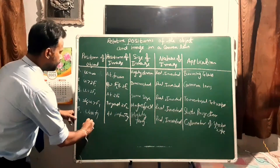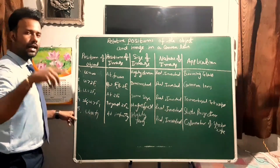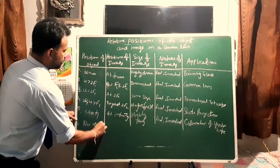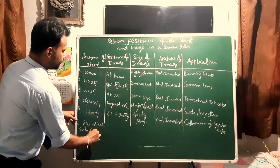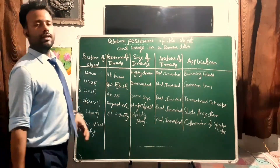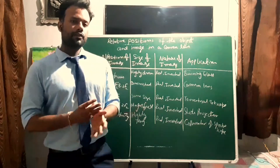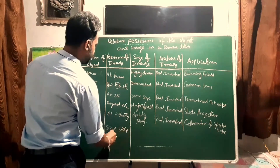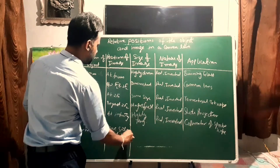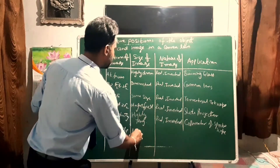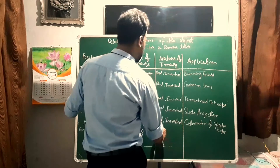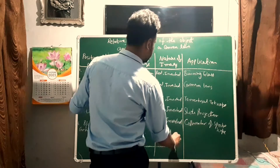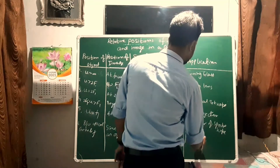The last case: when u is between the optical center and the focus, the image is formed on the same side as the object, beyond 2f. The image is magnified, but in this case it is virtual and erect. We use this in a magnifying glass.